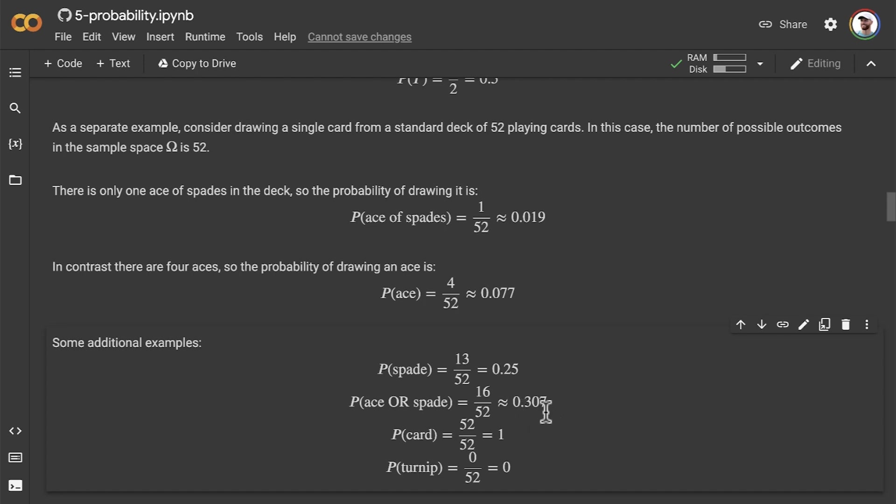A couple more examples that crystallize this idea: the probability of drawing a card, any card, from the 52 cards, there's a 52 in 52 chance that we'll do that. So there's a probability of 1, a 100% chance that any card we pull out of the deck is going to be a card. Whereas the probability of pulling a turnip out is 0 in 52. There's no chance that we're going to end up pulling out a turnip, so that probability is 0, or 0%.